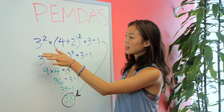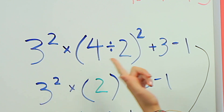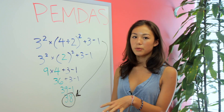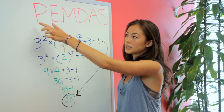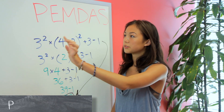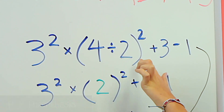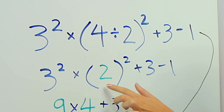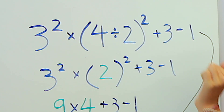So we start here — I have this example, which is an equation that has a lot of different elements in it. And we're going to go through with the order of operations, starting with the first letter of PEMDOS: P, which stands for parentheses. So that means we solve whatever is in the parentheses first. So 4 divided by 2, we have 2. That's the first step.